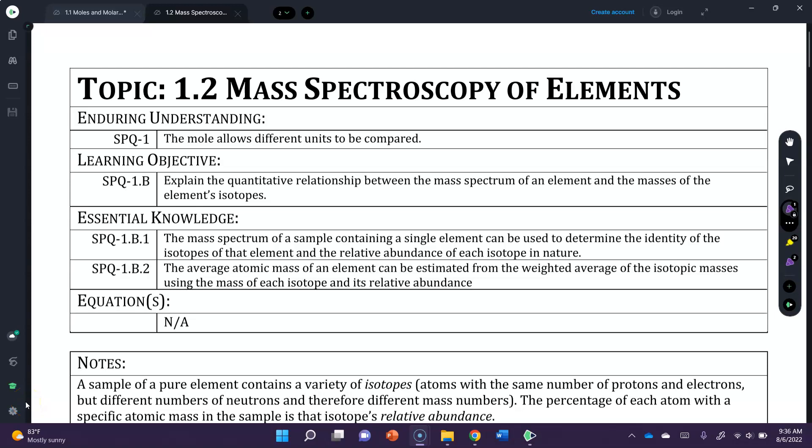Hello everyone, welcome to topic 1.2 mass spectroscopy of elements. The essential knowledge that you will come away with today is that the mass spectrum of a sample containing a single element can be used to determine the identity of the isotopes of that element and the relative abundance of each isotope in nature.